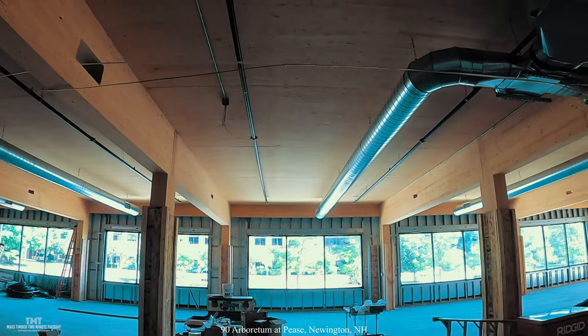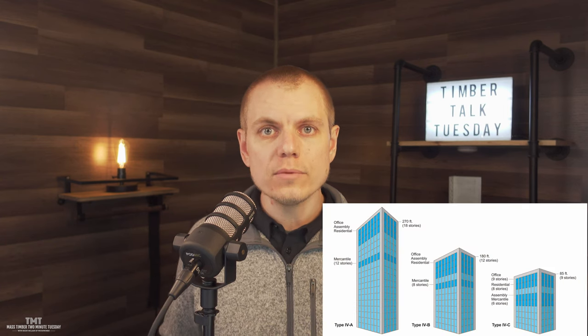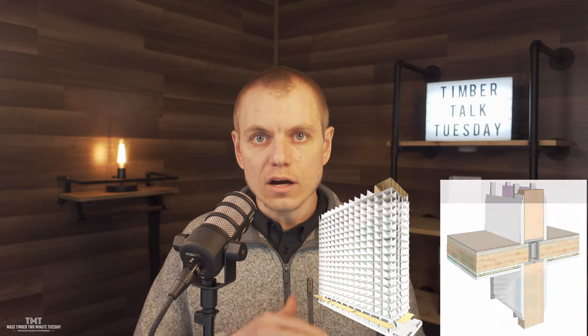That does certainly change as you start looking to the 2021 version of the code, specifically for the tall mass timber construction types, Types 4A and 4B. Type 4A construction requires timber encapsulation 100% throughout the building, so there can be no exposed timber elements — beams, columns, slabs, etc. — on top of floor assemblies, on the bottom of floor assemblies, exterior walls — all of the timber has to be encapsulated in Type 4A.